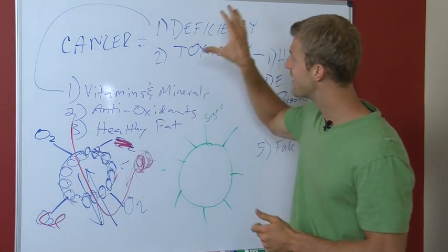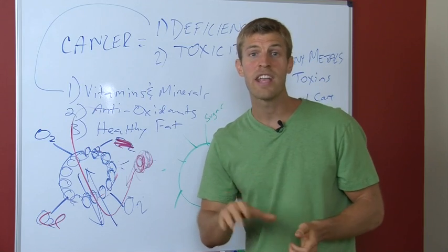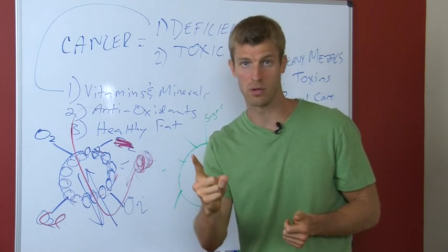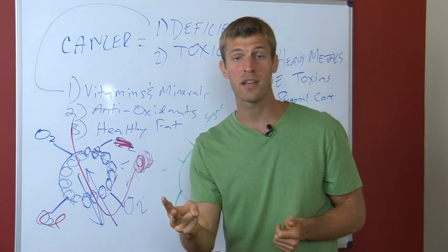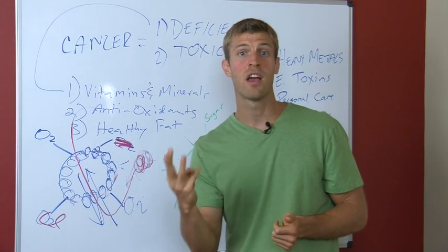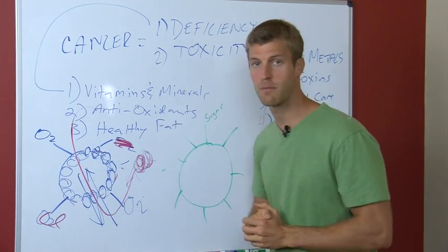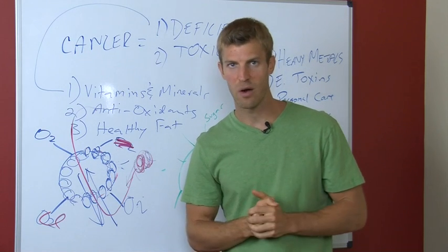Next step here, deficiencies. You want to take care of all your deficiencies. You want to eat a nutrient-dense diet. Here are the top five foods you can eat to build up your nutrients. Number one is vegetables. They're the most nutrient-dense food. Number two is fruit, specifically berries. Number three, beans. Number four, nuts and seeds. Number five, organic meats. You start loading up the nutrients in your body. That's going to help your body prevent cancer. It's going to help your body get healthy and well.